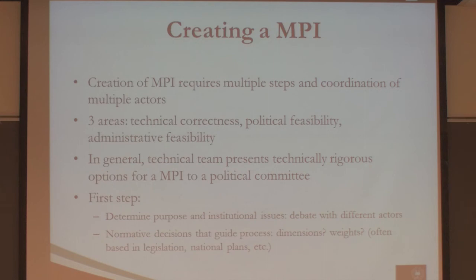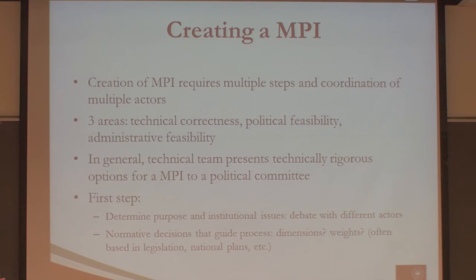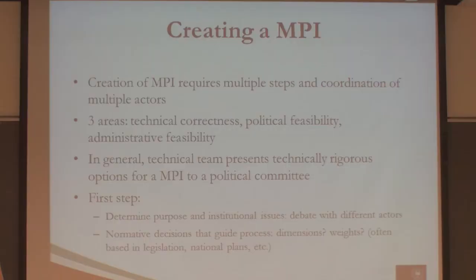There is going to be a group working mostly on technical issues and another on political issues, and they need to interact throughout the process. The first essential step is to determine the purpose of the measure. Even within poverty measurement, the objective can be very different — whether to have a poverty profile describing who is poor and where, or to guide policy by choosing indicators susceptible to modification through public policy, or to target the poorest 20% for a specific program.